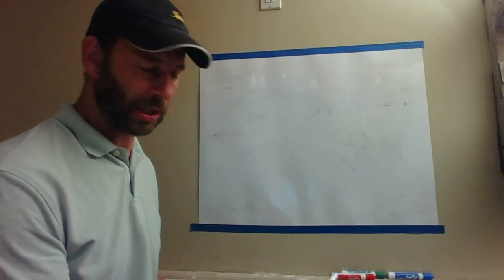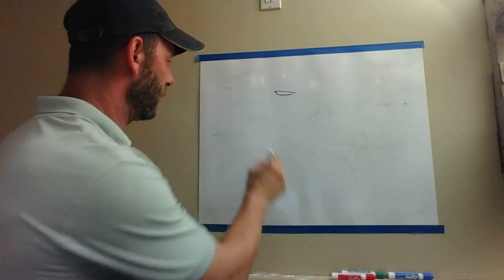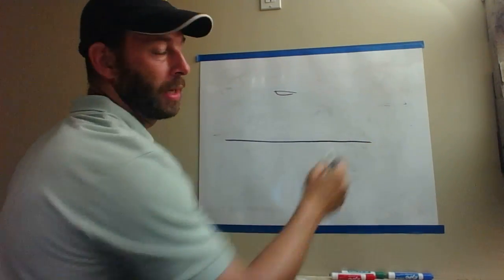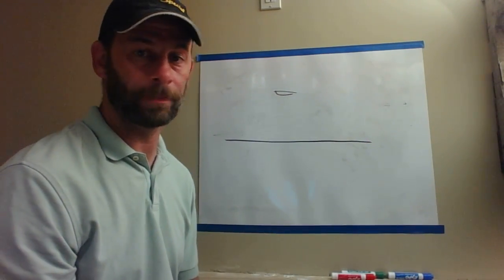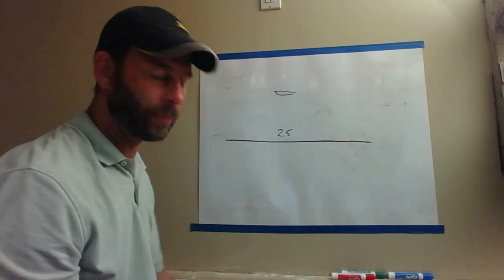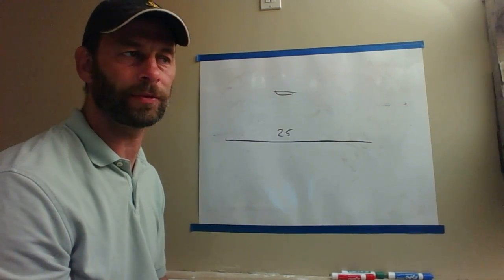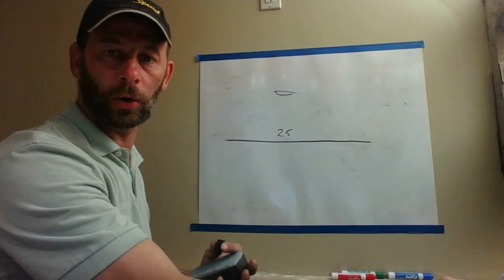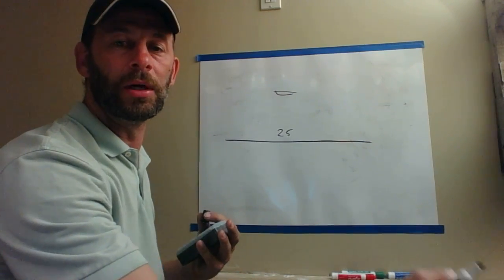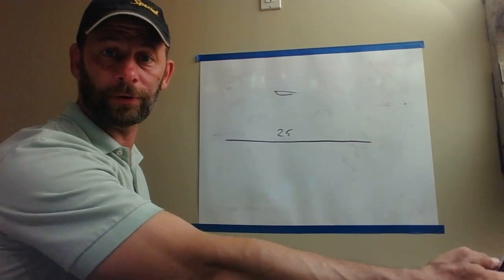So as far as knowing how much line to put out, the most important part is knowing how much water you're in. You need to know your depth. So if you're in 25 foot of water, the general rule typically is four times, some would say five times, but four times your depth. That's how much rode and line you should have out when you drop your anchor. So 25 foot of water, you want 100 foot of line.